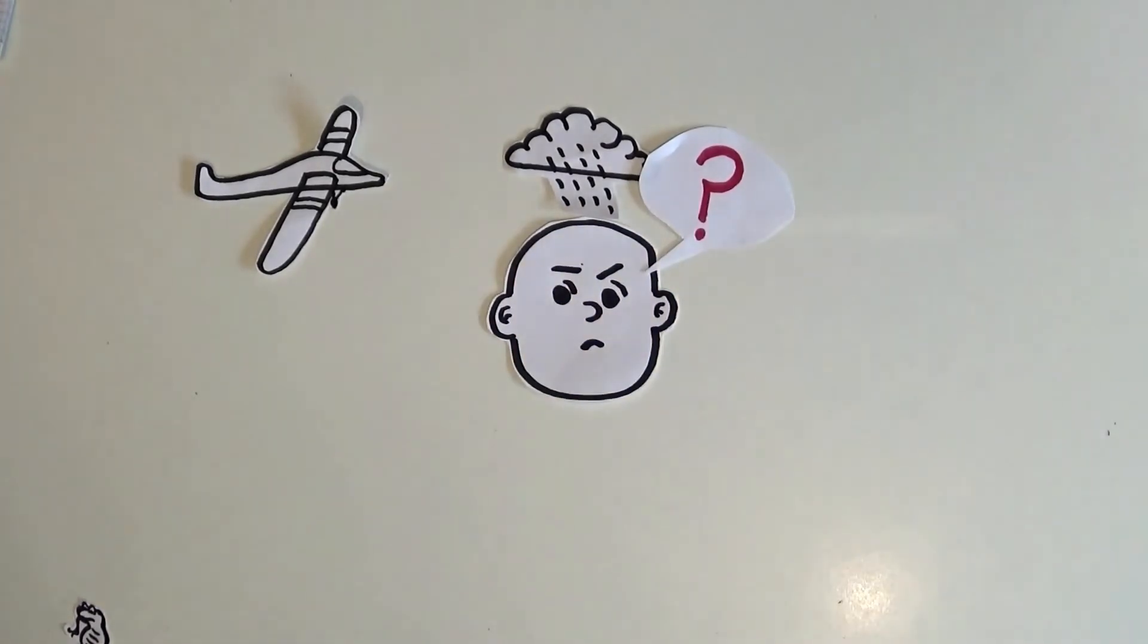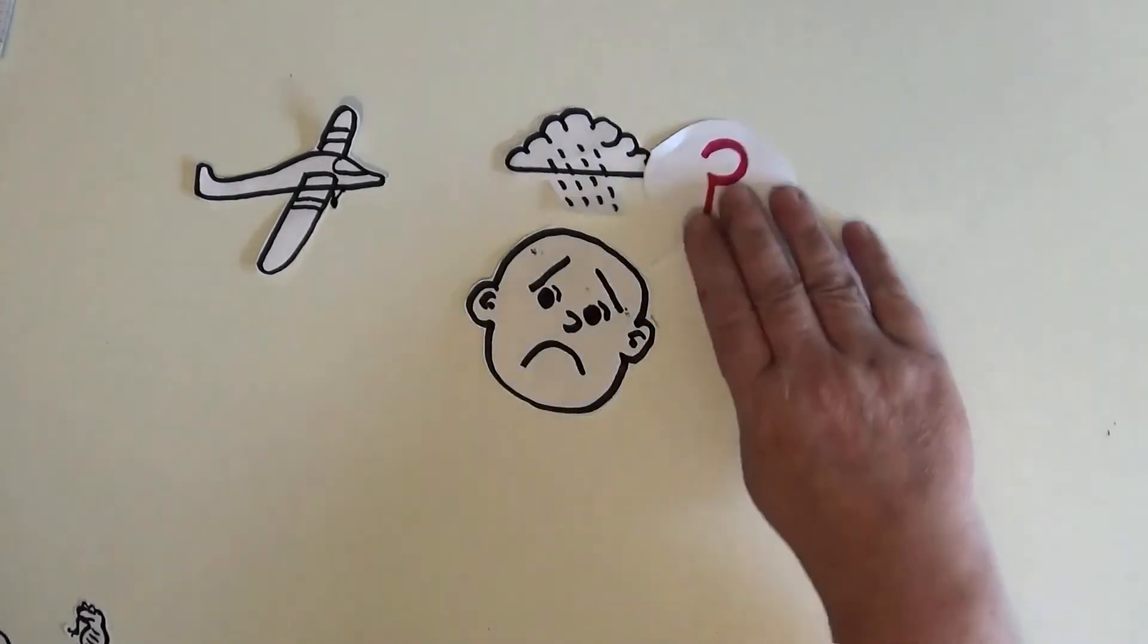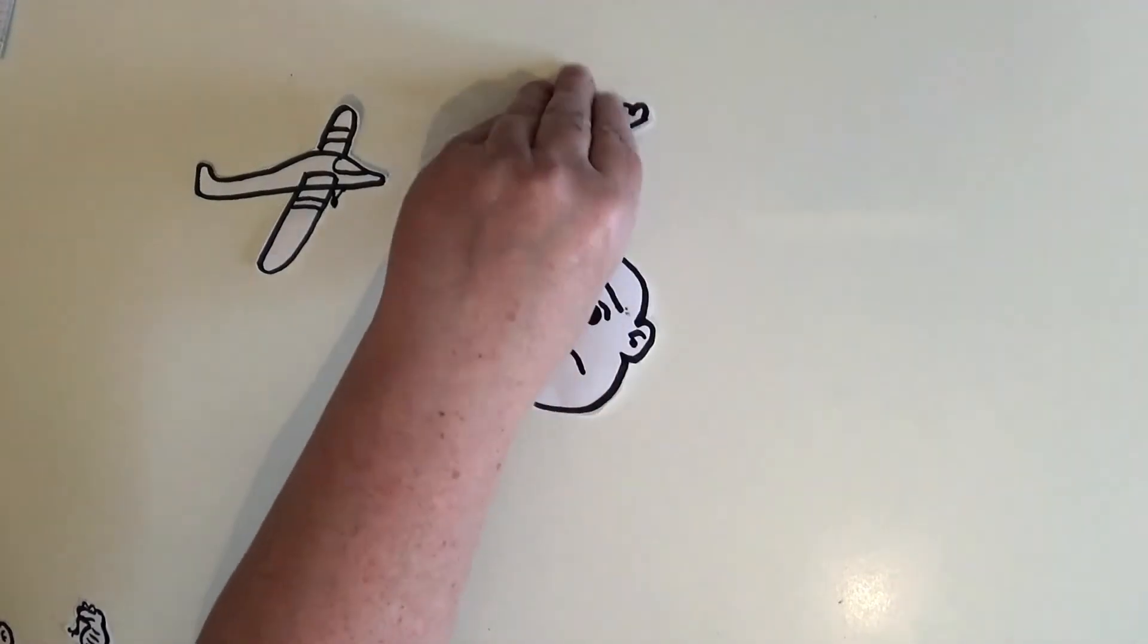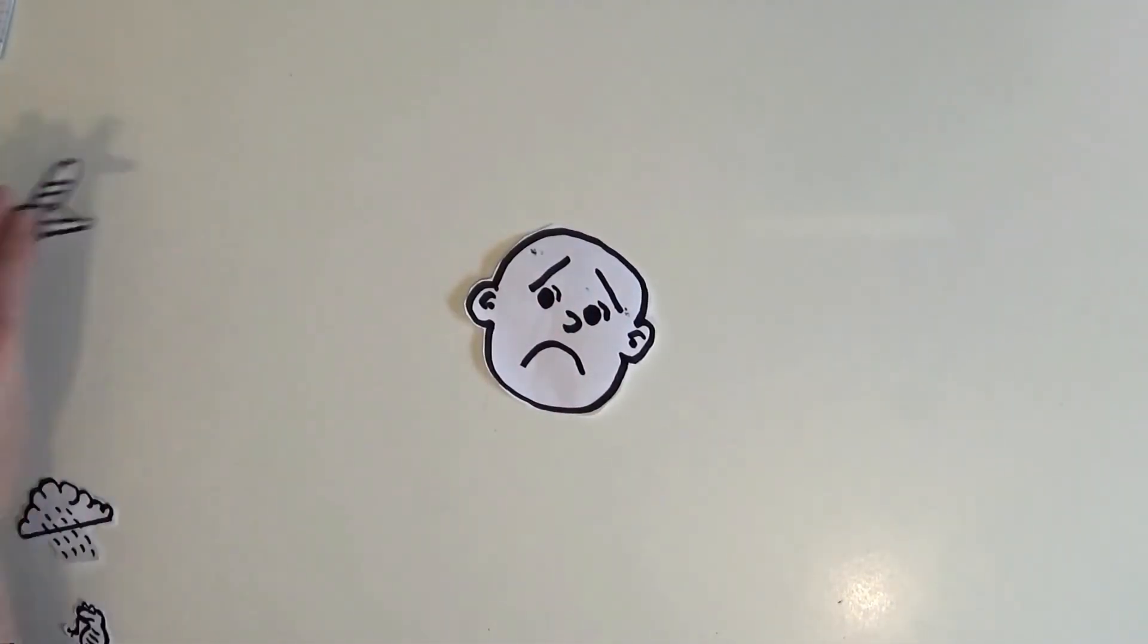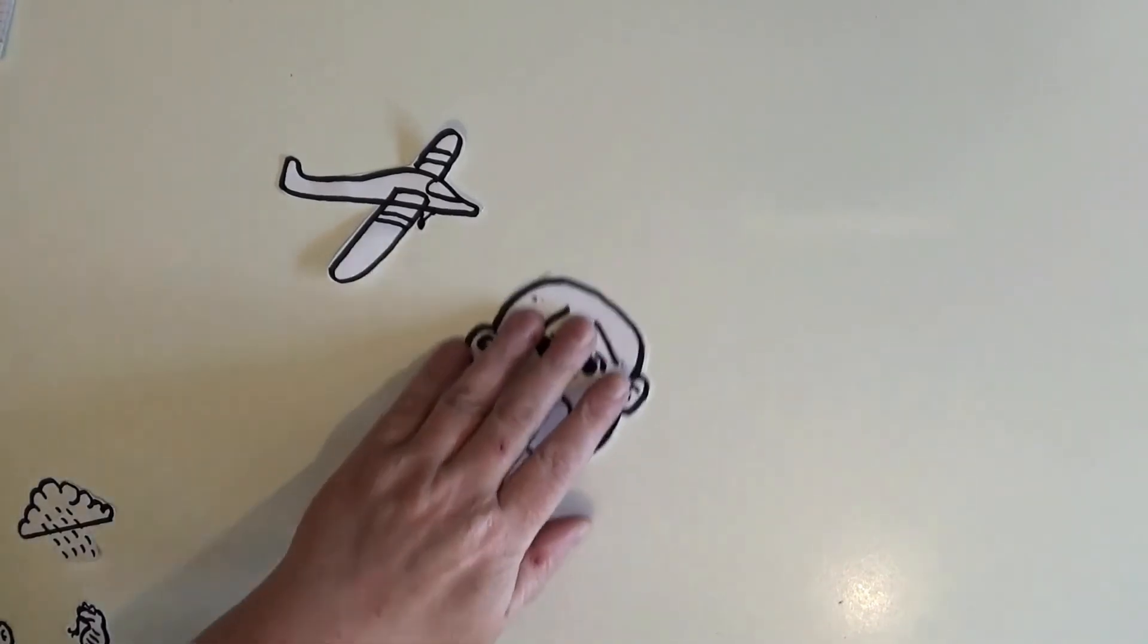And then we thought we'd have some fun with it and we can move each of these aspects around. We decided that maybe Seamus was sad to start with. So we had a sad face. But that Seamus was going to go on holiday to cheer him up. We used our plane and that made Seamus feel happier.